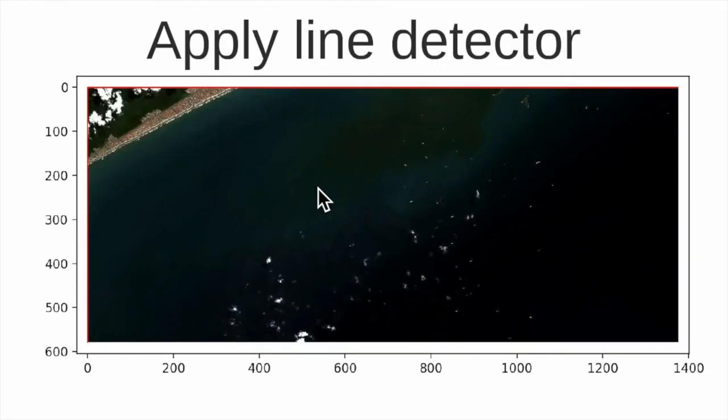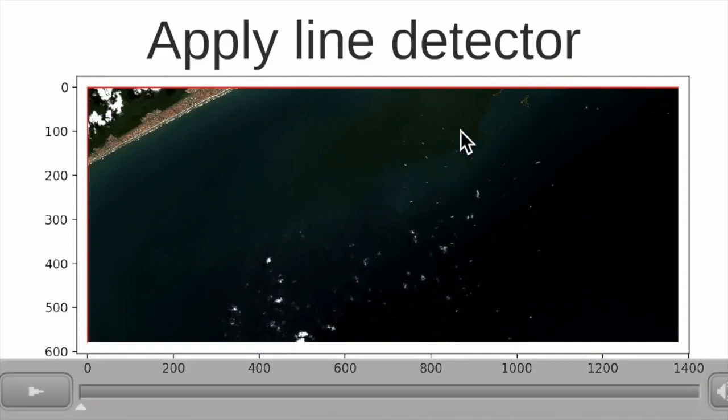To detect the ships in this image, we do all the previous steps. We get the image, compute NDWI, apply the threshold and filter the image, and then we apply a line detector. Because all of the ships have this aspect here to be small lines inside the water.